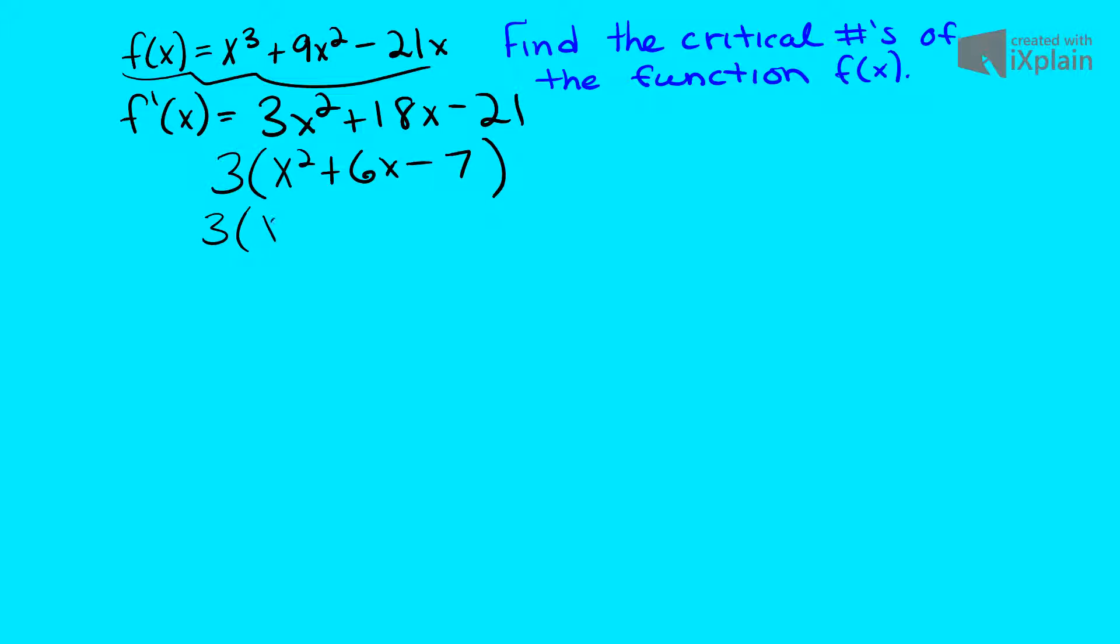So let's make this x minus 1 and x plus 7, and now we're just going to set our x values equal to 0. This 3 is pretty much cancelled out, doesn't have an x value accompanying it, so we get x equals 1 and x equals negative 7, and these are our two critical points, critical numbers I should say.